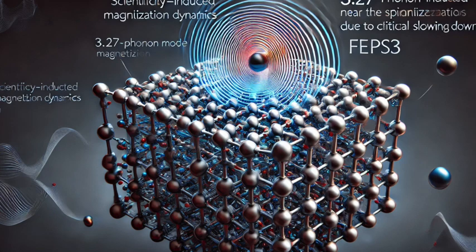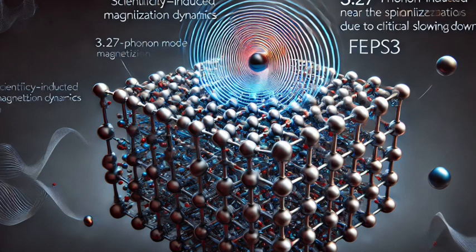And because this phonon mode is coupled to the magnetic properties, well, those excited vibrations end up nudging the electron spins, knocking them out of their balanced anti-ferromagnetic state. So it's like a chain reaction: the light excites the phonon, the phonon nudges the spins, and that creates the magnetization.